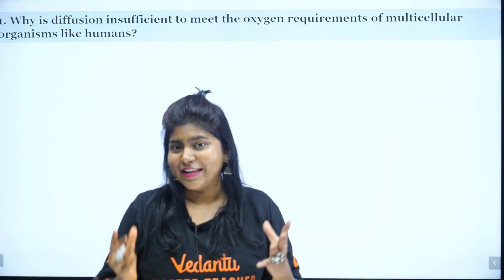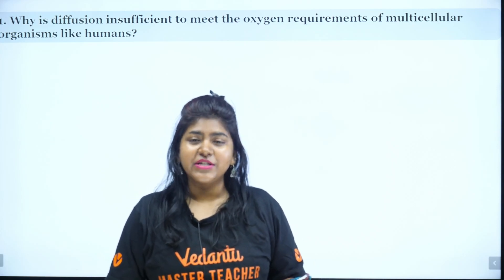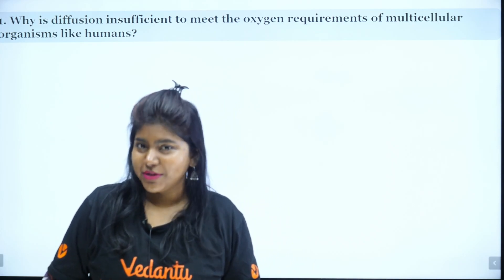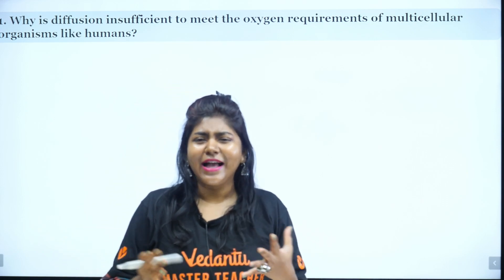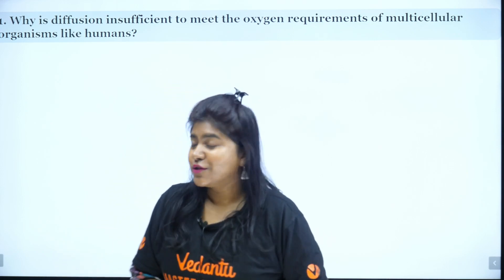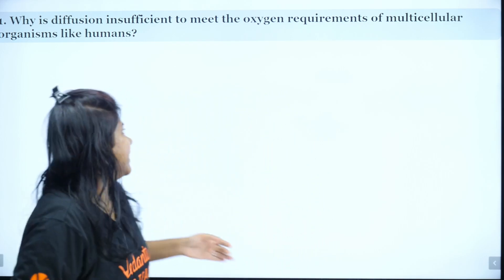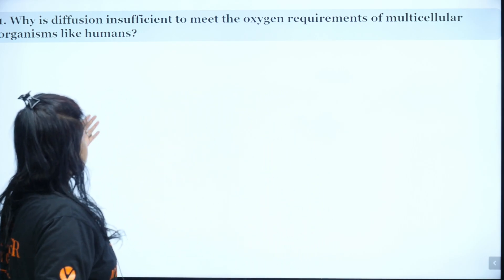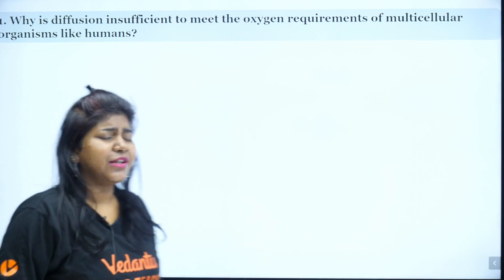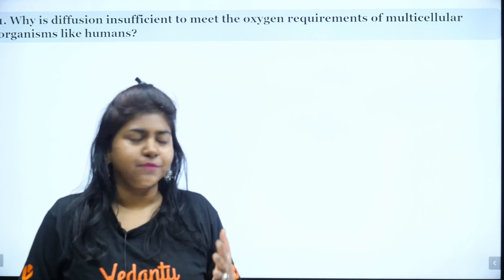In this session, we will talk about the life process. We will solve these questions in NCAT. So we will talk about the answer. The first question is: Why is diffusion insufficient to meet the oxygen requirements of multicellular organisms like humans?